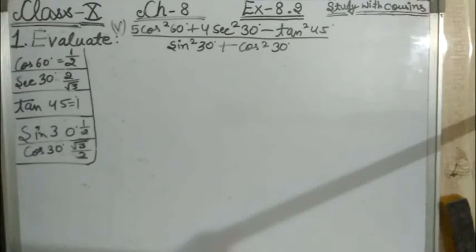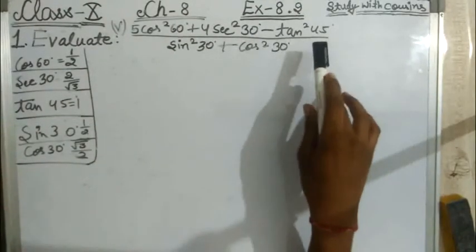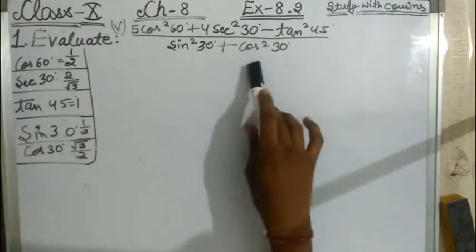Question 1: Evaluate 5 cos² 60° plus 4 cosec² 30° minus tan² 45° upon sin² 30° plus cos² 30°.